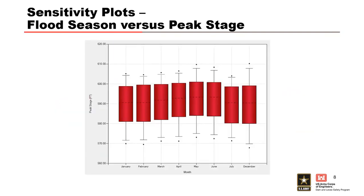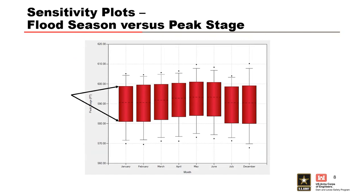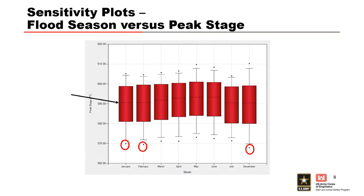The third sensitivity plot type shows the effects of flood seasonality by showing the variation in peak stage for each month using box and whisker plots. The box and whisker plots provide seven-number summaries: two points representing the max and min values, whiskers representing the 5th and 95th percentiles, the box representing the 25th and 75th percentile, and a dashed line representing the median. These can be used to evaluate the months that produce the largest and smallest variations in peak stages. For example, December and May showed the largest maximum peak stages, while January, February, and December resulted in minimum peak stages, and May and June had the highest median peak stages.